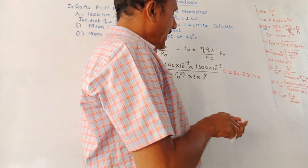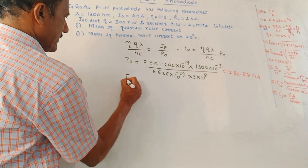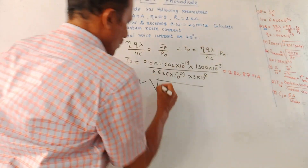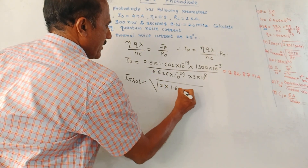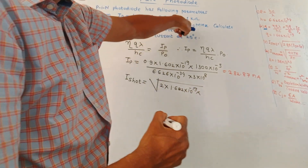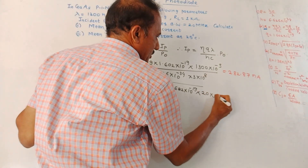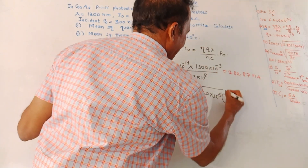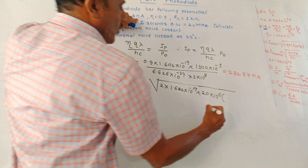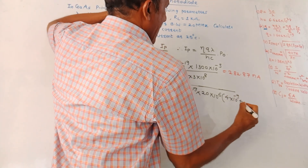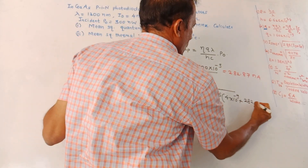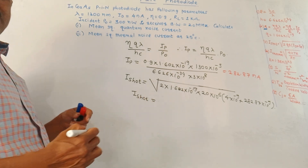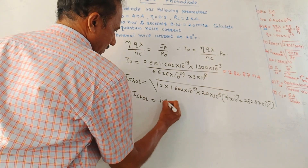Now calculate the shot noise current using I_shot = √(2qB(I_D + I_P)), with q = 1.602 × 10⁻¹⁹, B = 20 × 10⁶ Hz, I_D = 4 × 10⁻⁹ A, and I_P = 282.87 × 10⁻⁹ A. The mean square quantum (shot) noise current = 1.35 nanoamperes.